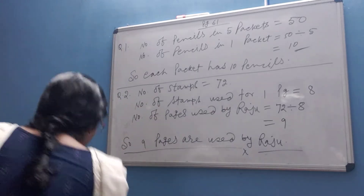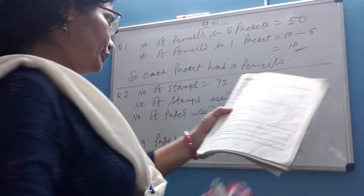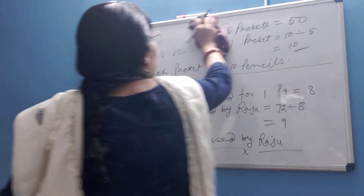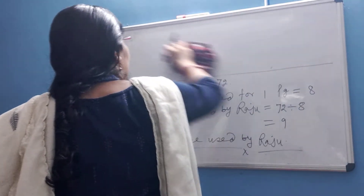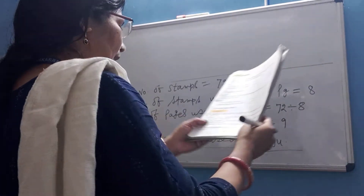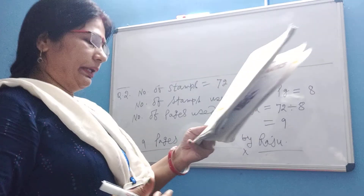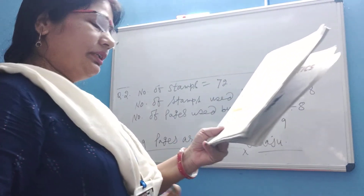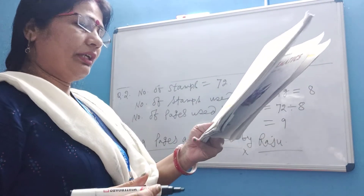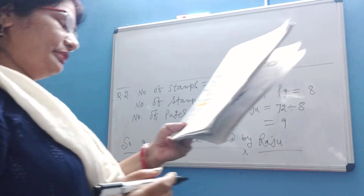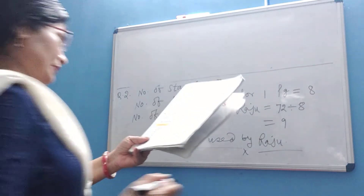Next, question number 3. There are 35 biscuits in a packet. Five girls want to share them equally. How many biscuits will each get?